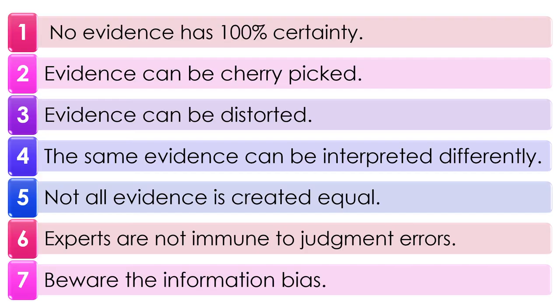In this video, we talked about what evidence is. Numbers and metrics can be deceptive. Texts can be emotionally contagious. We also talked about seven things leaders need to know to make evidence-based decisions. They are: 1. No evidence has 100% certainty. 2. Evidence can be cherry-picked. 3. Evidence can be distorted. 4. The same evidence can be interpreted differently. 5. Not all evidence is created equal. 6. Experts are not immune to judgment errors. 7. Beware the information bias. Hopefully, this video will help you become more evidence-savvy. What are your thoughts about evidence-based decision-making? Is there anything I missed about evidence? Please share it in the comments below. I'll see you next time.